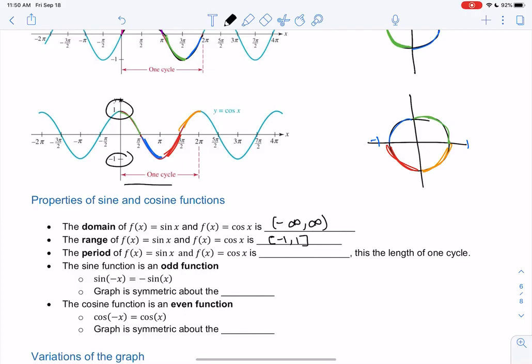The period is the length of one cycle, and so with the standard graph, that's 2 pi. This is with no transformations or anything.